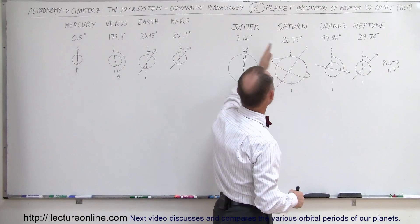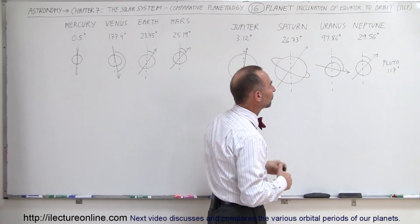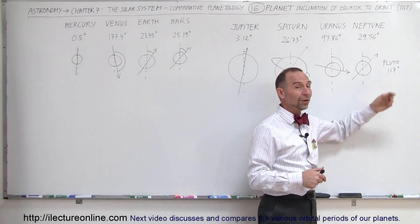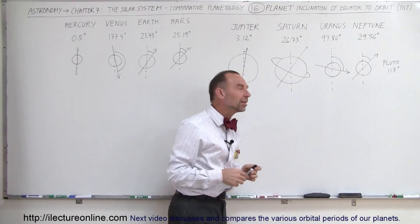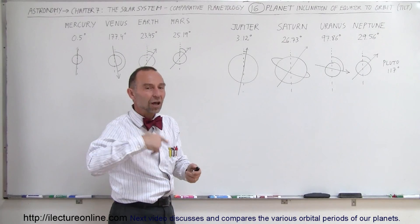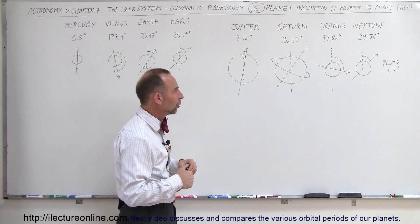And Neptune again falls in line with Saturn, Mars, and the Earth at about 29.5, almost 30 degrees. Now take a look at Pluto. Pluto has a rotational inclination, a rotational tilt of 117 degrees, which also technically causes it to rotate in the opposite direction. And so there's retrograde rotation for Pluto as well.